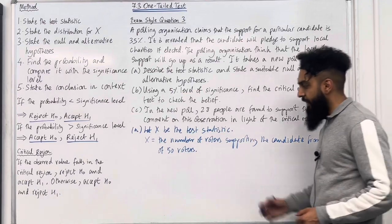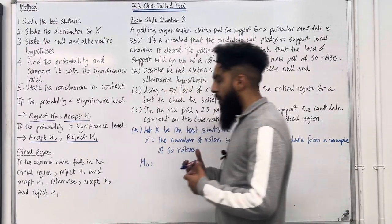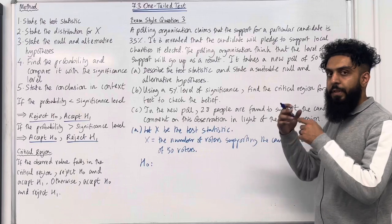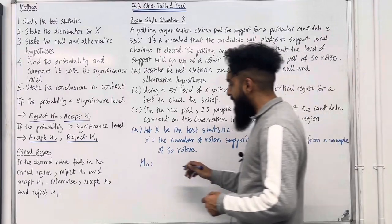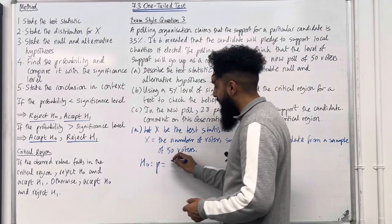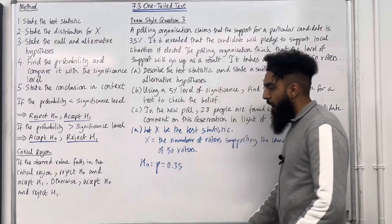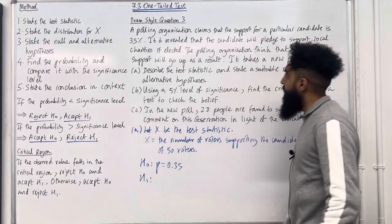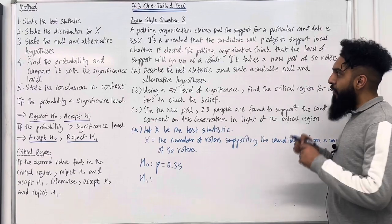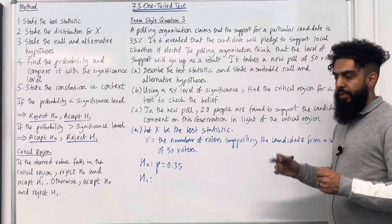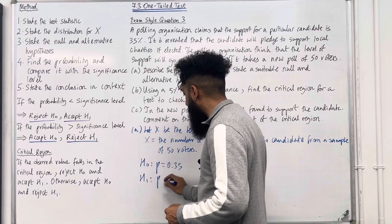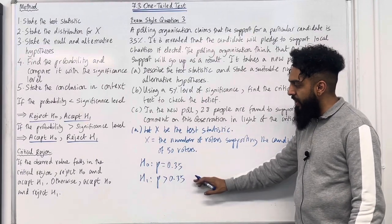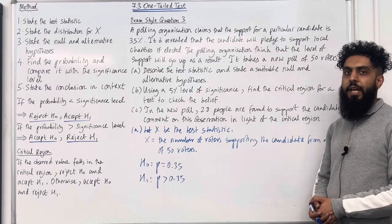The null hypothesis H0 is what we assume to be correct: P equals 35%, in other words 0.35. The alternative hypothesis H1 is what we are trying to test. The polling organisation thinks that the level of support will go up, so the proportion P in H1 has to be greater than 0.35. That completes Part A.